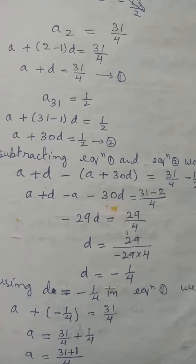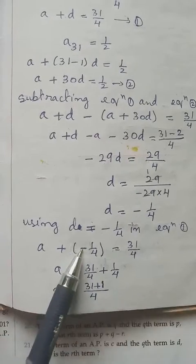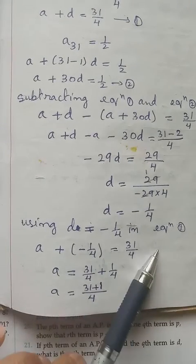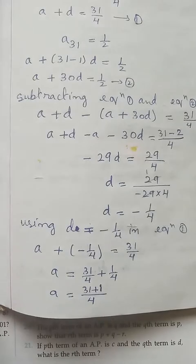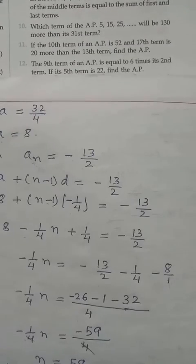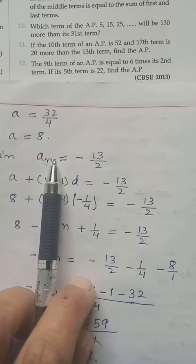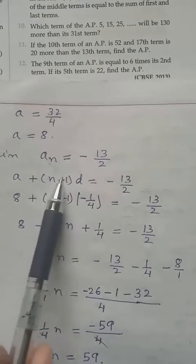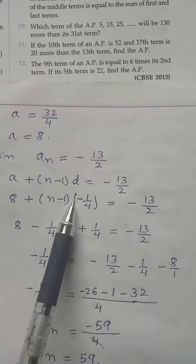Now substituting d = −1/4 into equation 1 to find a: a + (−1/4) = 31/4. Moving −1/4 to the other side: a = 31/4 + 1/4 = 32/4 = 8. So a = 8. We now need to find the number of terms n using the last term an = −6½ = −13/2.